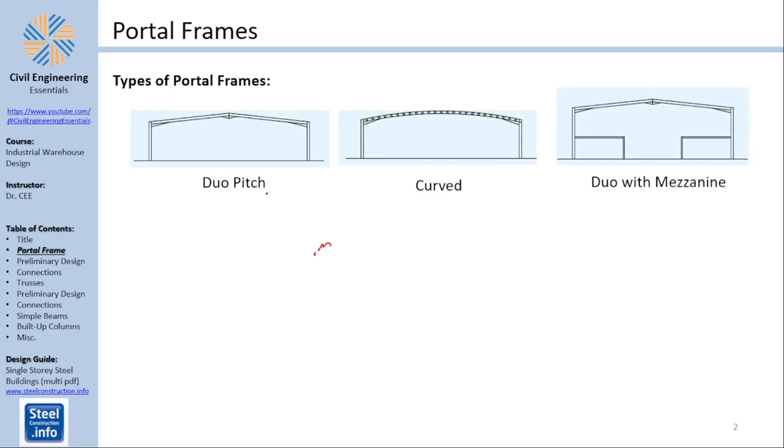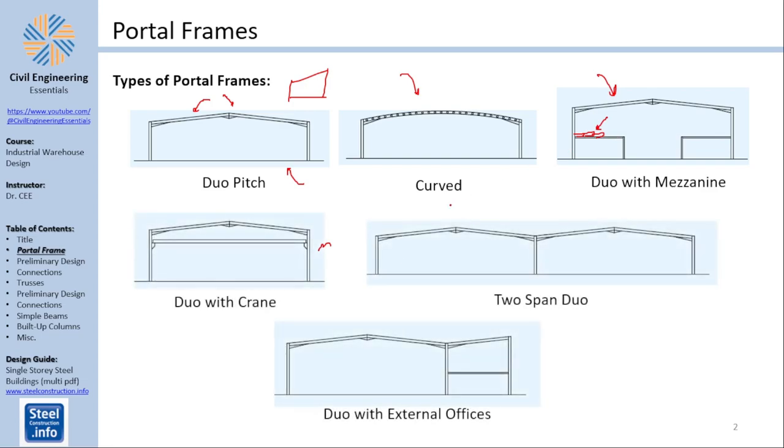Talking about the types of portal frames, you have duo pitch which is basically double pitch meaning that each span pitches on its own. There is of course a single pitch warehouse but that's beyond what we will cover today. You have a curved portal frame, you have a dual portal frame with mezzanine floor, you can use here pre-cast concrete slab if you have stuff above that mezzanine floor and you have of course the duo pitch with the crane which we've explained before that the crane moves like this. The crane has movement right and left and has a movement perpendicular to the plane which is back and forth. You could have a duo span, you have a two span duo and a duo with an external office.